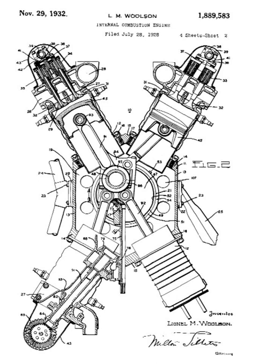The Rolls-Royce Vulture was based on two Peregrines and served as the powerplant of the ill-fated Avro Manchester bomber and the Hawker Tornado fighter. The Rolls-Royce X was an air-cooled sleeve valve prototype engine.